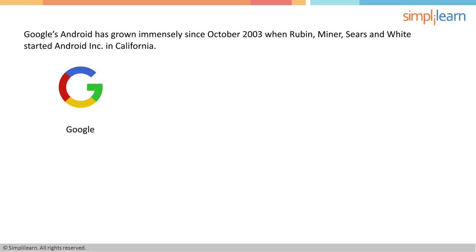Google's Android has grown immensely from October 2003, when Rubin, Minor, Sears, and White started Android Inc. in California. The popularity of Android didn't come about in a day. Android developers braved buggy IDEs, OS fragmentation, slow emulators, and a boring user interface to get it to what it is today.